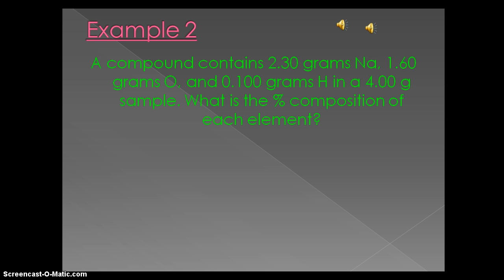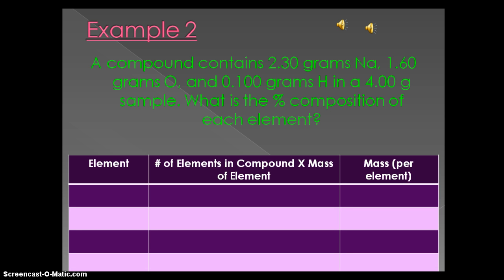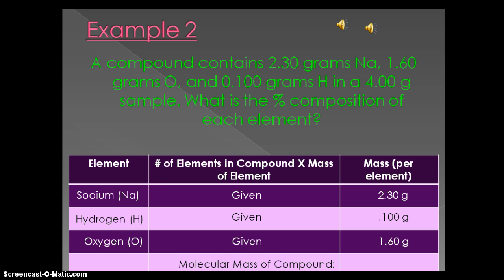Example 2, a compound contains 2.30 grams of sodium, 1.60 grams of oxygen, and 0.100 grams of hydrogen in a 4 gram sample. What is the percent composition of each element? In this example, we have several given pieces of the equation. For example, starting with the element sodium, the mass for that element is given at 2.30 grams. The same for hydrogen at 1.00 grams, and the same for oxygen at 1.60 grams. The total molecular mass of this compound is given at 4.00 grams. Normally, we would have had to solve for all of these, but with this example, these are all givens.